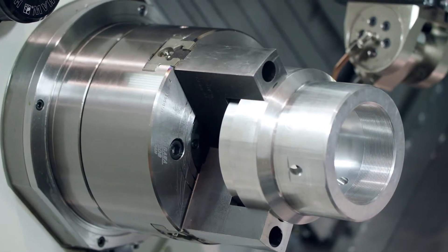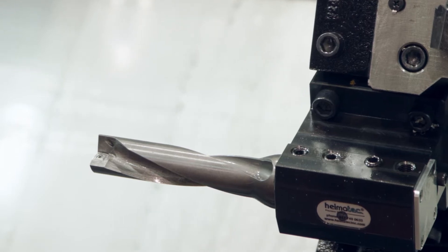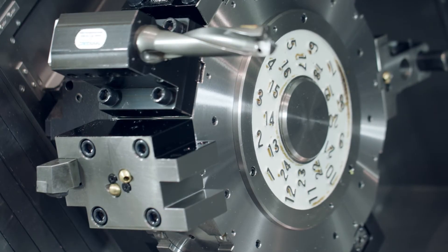The turrets are 12 position each. However, Nakamura have incorporated a half-index feature that allows us to put up to 24 tools on one turret.